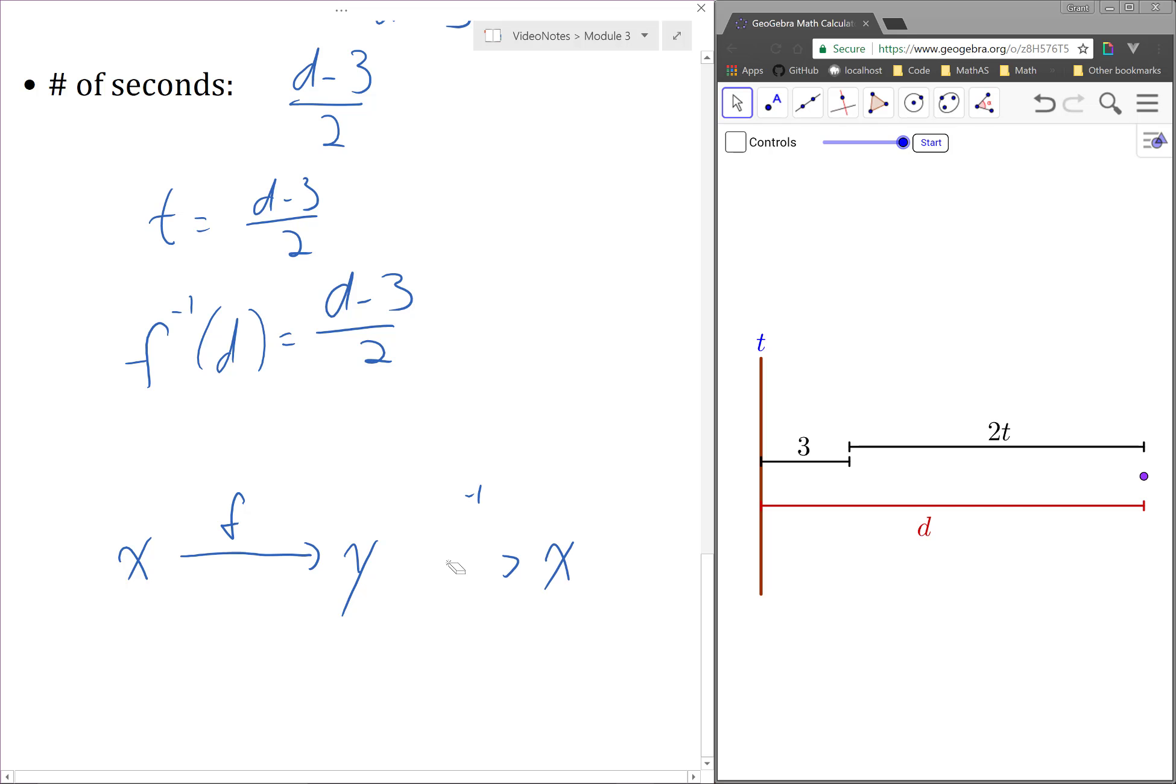So maybe I should have drew it like this. So f takes value of x gives us a value of y. F inverse will take that value of y and give us the original value of x. This is how we will be thinking about function inverses in this investigation.